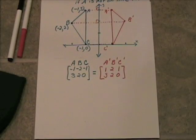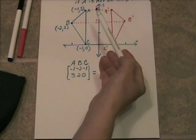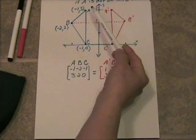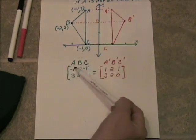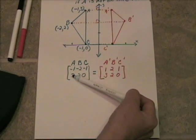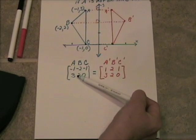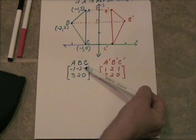Alright, let's take a look here briefly. I've stored the points A, B, and C into this point matrix: negative 1, 3, negative 2, 2, and negative 1, 0.